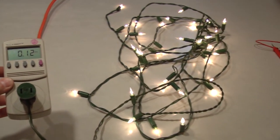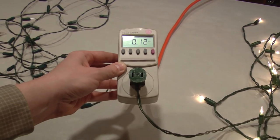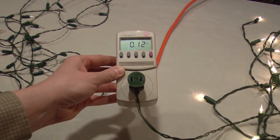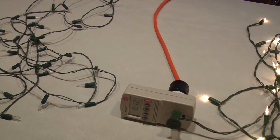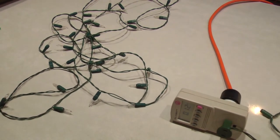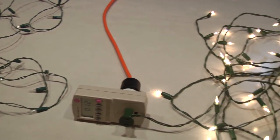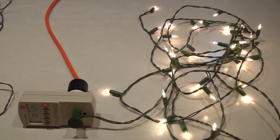This set of 35, again they're all working, only draws 0.12 amps. Now in both cases, each bulb is getting about 3.5 volts because they're 35 light sets. So basic math, 120 volts divided by 35 is 3.5 volts per light. But if I take a bulb out of this set,